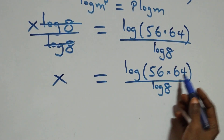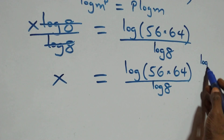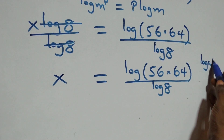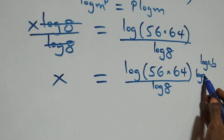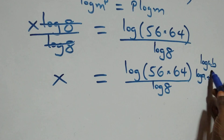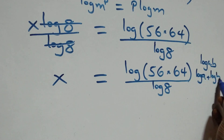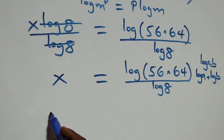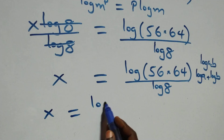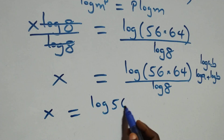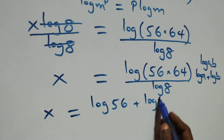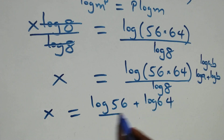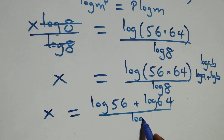This follows the log product rule: when we have log of a times b, it is the same thing as log a plus log b. So all we have becomes x equals log 56 plus log 64, all over log 8.